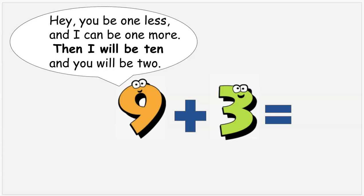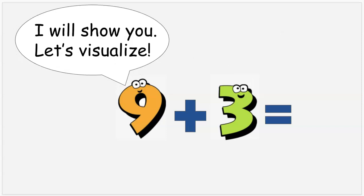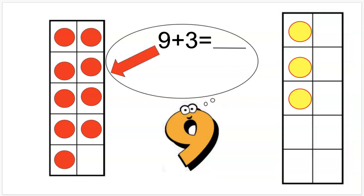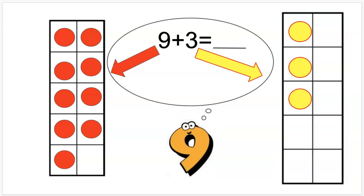Hey, hey Three — you be one less and I can be one more. Then I will be ten and you will be two. I will show you. Let's visualize! Let's use the ten-frames to help us visualize. There I am, nine, and there's three. Let's move closer together so you can see.